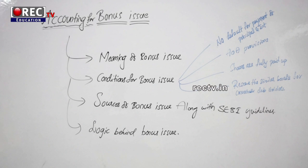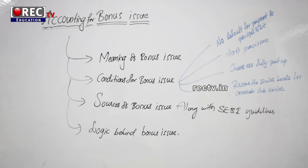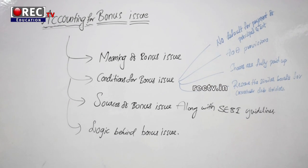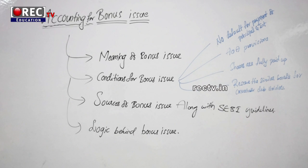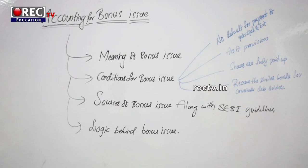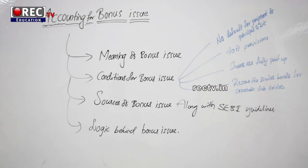The conditions are: no default for payment of principal and interest of the debenture holders; your AOA provision should permit the bonus issue; shares are fully paid up; and the last condition is that you reserve similar benefits for the convertible debenture holders.